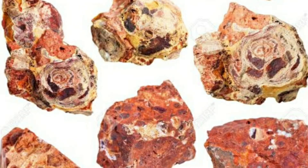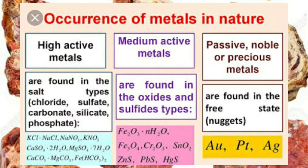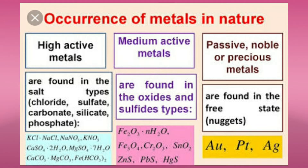In the occurrence of metals in nature, we find high active metals, medium active metals, and precious metals. High active metals are found in the form of salts like chlorides, sulfates, carbonates, silicates, and phosphates. For example, potassium chloride, sodium chloride, calcium sulfate, and magnesium carbonate. Medium active metals are found in the form of oxides and sulfides.